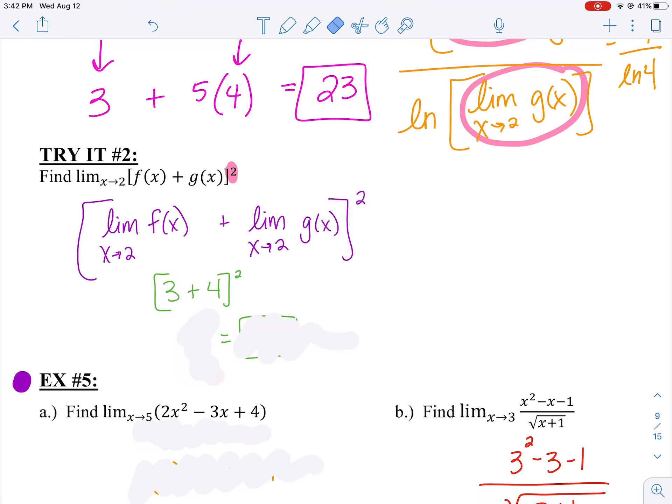The limit as we approach two of F(X) is three. The limit as we approach two of G(X) is four. And then I need to square whatever's inside there, making sure that I follow the correct order of operations. I'm going to do inside the parentheses first. So three plus four is seven. And seven squared is 49. I can use my limit rules to break it up into smaller pieces so that I can evaluate a more complicated limit problem.